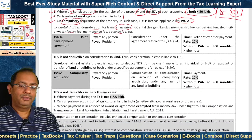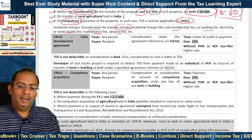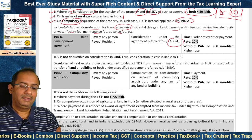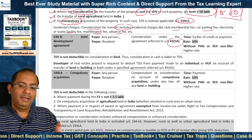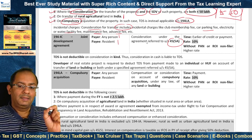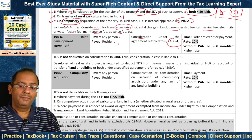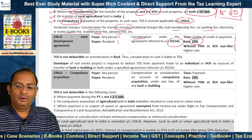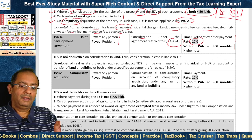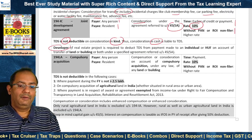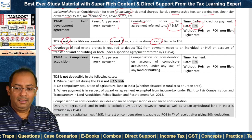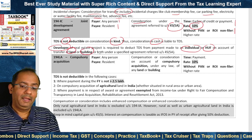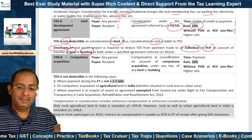Section 194IC applies in the case of a joint development agreement as referred to under section 45(5A). The payer can be any person and the payee should be a resident. TDS is on the consideration under the agreement referred to under section 45(5A). The time is the earlier of credit or payment, and the rate is 10%. A higher rate applies for without-PAN or ROI non-filer cases. TDS is not deductible on consideration in kind. A developer of a real estate project is required to deduct TDS from payment made to an individual or HUF on account of transfer of land or building under a specified agreement.